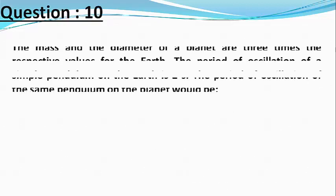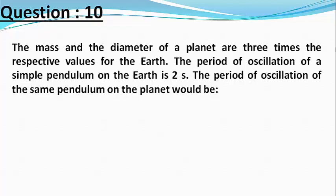Our question is: the mass and the diameter of a planet are three times the respective values for the Earth. The period of oscillations of a simple pendulum on the Earth is 2 seconds.